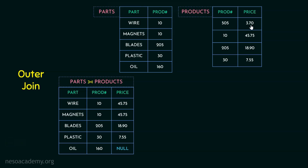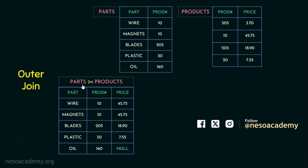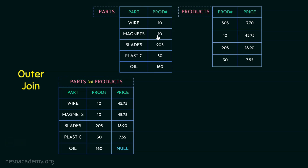Let's start with the left outer join: parts left outer join products. The product number 505 has a price of 3.70; for 10, 45.75; for 205 and 30, we have other values respectively. In left outer join, the matching rows in both relations will appear, and also the non-matching rows from the left-hand side relation will appear. Wire has product number 10 — yes, 10 is in the products relation with 45.75, so Wire 10 45.75 appears. Magnets also has 10, so Magnets 10 45.75 also appears. Blades has 205, which exists in products, giving Blades 205 18.90.